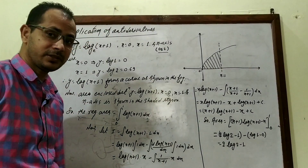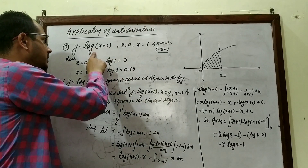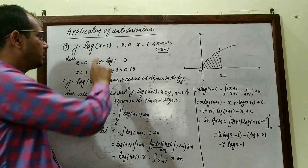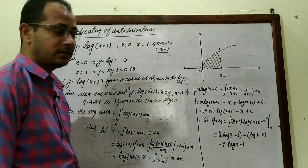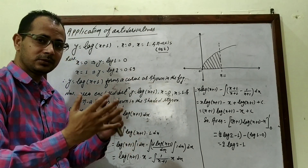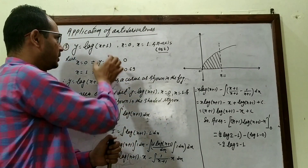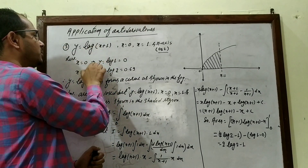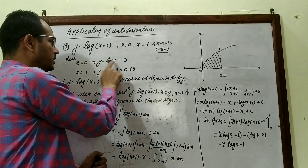One more problem: y = log(x + 1), x = 0, x = 1, x-axis — find the enclosed area. To draw the curve, for x = 0, y = log(1) = 0, so it passes through the origin.